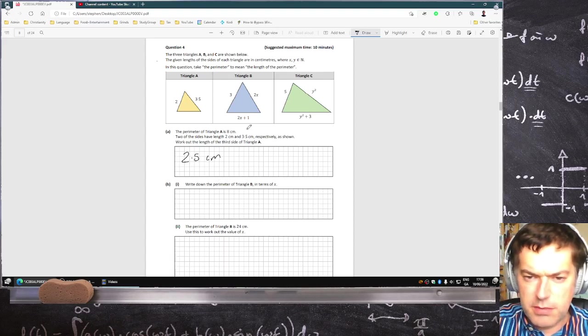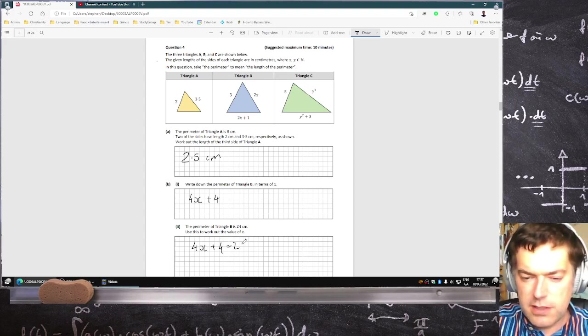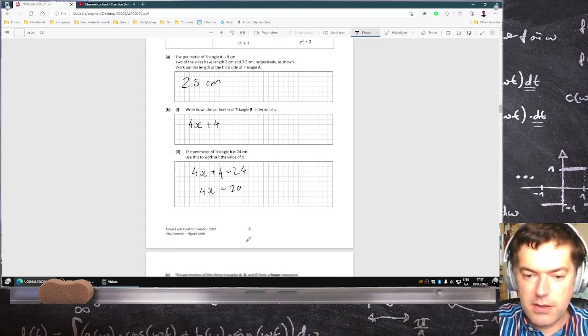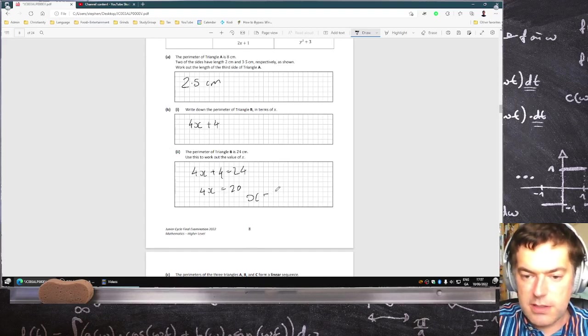Write down the perimeter of triangle B. 2X plus 2X is 4X. 3 plus 1 is 4. And then the perimeter of triangle B is 24 centimeters. Use this to work out the value of X. So 4X plus 4 equals 24. So you can see that X has to be 5, because then you'll get 4X equals 24 minus 4, which is 20. And so you get X is 5 centimeters.